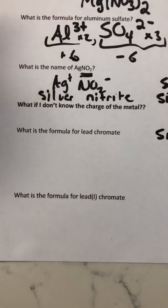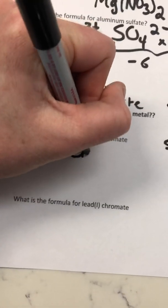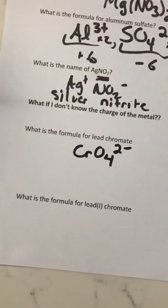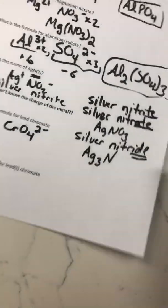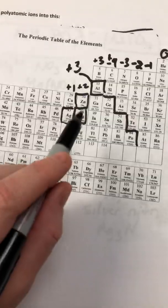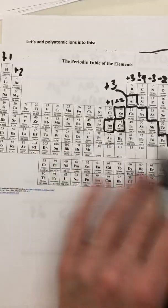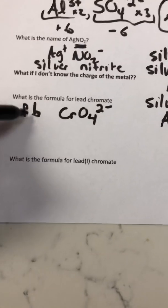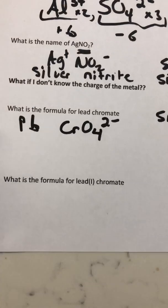What if you don't know the charge of the metal? For example, lead and chromate: chromate is CrO4 with a two-minus charge, and lead is Pb. But lead falls under the stair-stepper — it's not one of the elements we circled — so you have no idea what charge lead has. Lead could be plus one, plus two, plus three, or plus four. This is where Roman numerals come in.